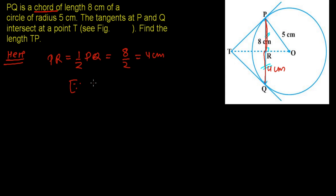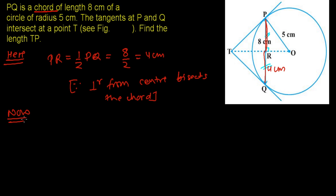The reason for this is that the perpendicular from the center bisects the chord. Now to solve this question, we have a lot of methods — we can solve it using the similarity concept or the Pythagorean theorem. I'm going to do this first by the Pythagorean theorem, which is a little easier to understand. Now I'm going to show you how many right-angle triangles we have here.